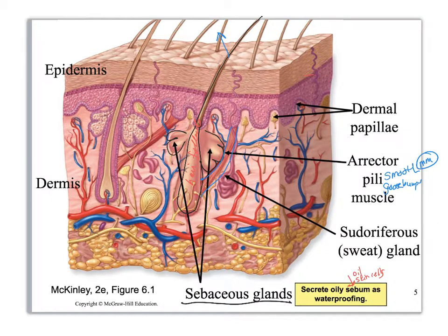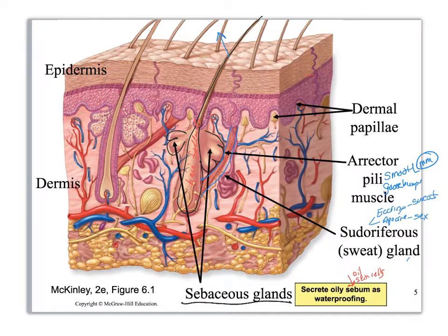Now we're going to look at sudoriferous glands, and we have two major kinds: eccrine and apocrine. When you think of sweat on your body that's wet and cools you off, you're thinking of eccrine glands. Apocrine glands secrete a sweat solution that's very thick and full of proteins and fat — basically they are sex secretions. They're only found in the anal-genital region and in your axilla. The sebaceous glands secrete their product into the hair follicle — the product is sebum, which is a mix of oil and shattered cells.